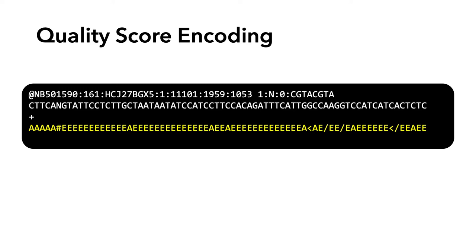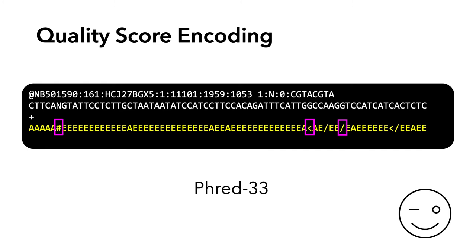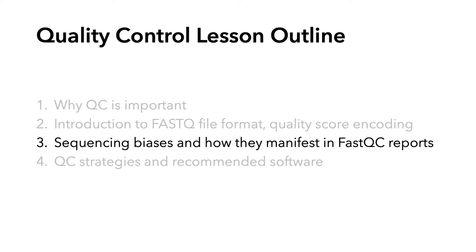Going back to our sample sequence — is it Phred 64 or Phred 33? If we look for differentiating symbols, identified in the pink boxes, you'll see that it's Phred 33. Next, we're going to talk about sequencing biases, or sources of sequencing biases, and how they manifest in FastQC reports.